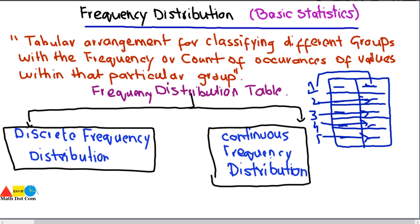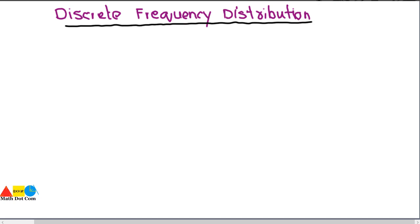Today we will learn how to form a discrete frequency distribution table and how it differs from continuous frequency distribution. As its name indicates, this type of frequency distribution table is used where you have a countable or limited number of values — where we have a limited or definite number of occurrences.